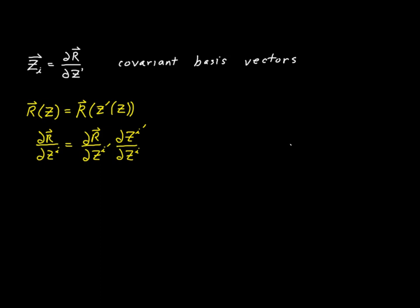The first thing I hope you recognize is that this term right here is nothing but our covariant basis vector. Likewise, this term is what the covariant basis would look like if we defined it in the z prime system. And what's new is this factor, so let's take a moment and come up with a new definition for this last factor.